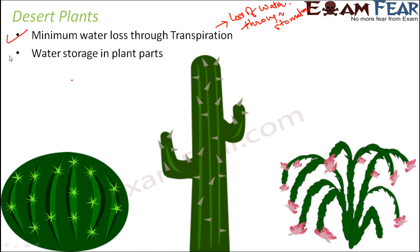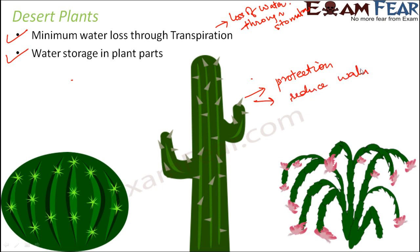The scenario is opposite in case of desert plants. If you look at a desert plant, it looks very different from normal plants. Firstly, they do not have leaves — instead they have spines. These spines help to reduce water loss and also help to protect the plant from animals, because animals will be afraid of the spines as they would hurt them. So spines help both in protection and in reducing water loss, since they are nothing but modified leaves.